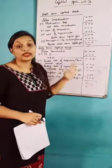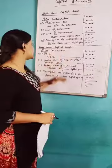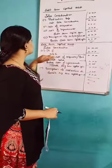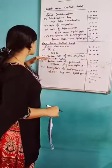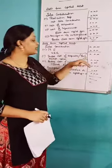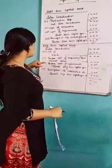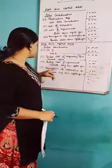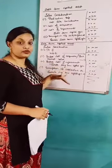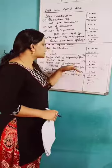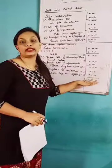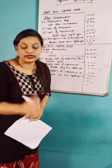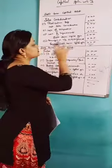For long-term capital asset: sales consideration, less realization expenses gives net consideration. Then less indexed cost of acquisition (fair market value) and less indexed cost of improvement gives gross long-term capital gain. Less exemptions under section 54B, 54D, 54G, etc., gives taxable long-term capital gain. This format is very important while solving problems.